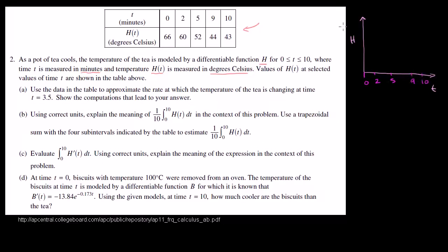At time 0, the temperature is 66 degrees Celsius. At time 2, it is 60 degrees Celsius. At time 5, it is 52 degrees Celsius. After 9 minutes, it's at 44 degrees Celsius. And after 10 minutes, it's at 43 degrees Celsius. So this is really just a graph showing how it cools off over those 10 minutes — that's what the data is telling us. It's kind of a curve like this, and we've sampled it at these points.